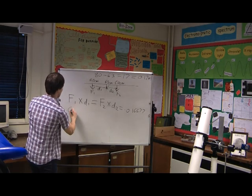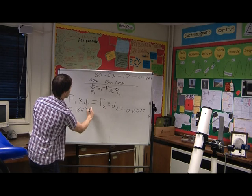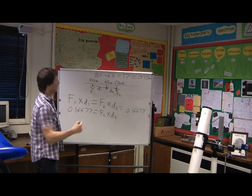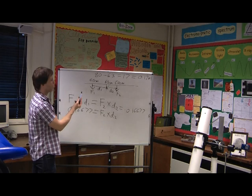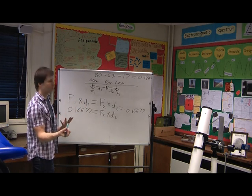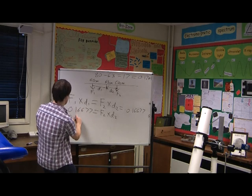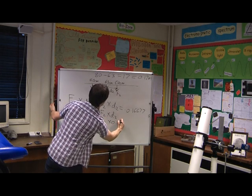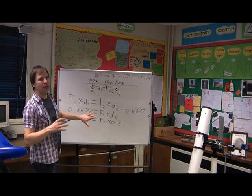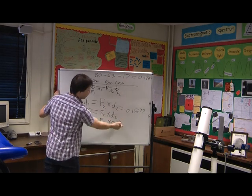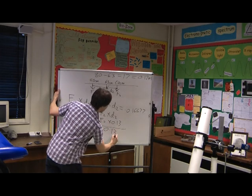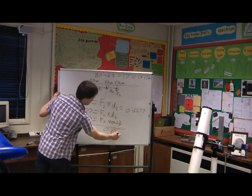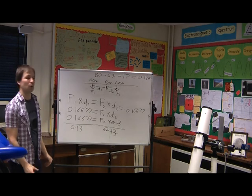Now, we know that all of this here must equal 0.16677. So let's write this out. 0.16677 must equal force 2 times distance 2. Now, we have distance 2 from the measurement there. 13 centimetres, 0.13 metres. So 0.16677 equals F2 times 0.13. We need to rearrange these equations. So if I've got times on this side, we need to do the inverse. So we divide that by 0.13, which means we have to divide this side by 0.13. They cancel out. Alright, have a go now and work out what the weight force of the ruler is.